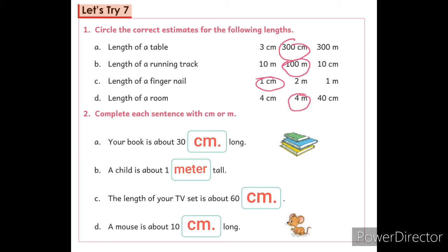Question number B: Length of a running track. The answer is 100 m. So, circle it.